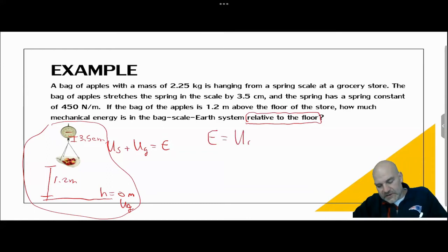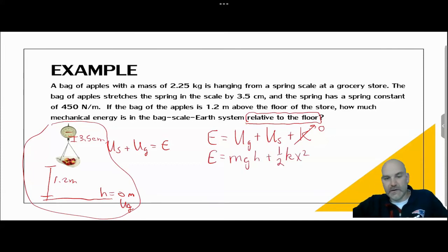So we're going to find the total mechanical energy. Now, there is no kinetic energy. I'll write it in the equation, but there is no kinetic energy because the apples are not moving. You put them in the scale, they just sit there. And so we do mgh plus 1/2 kx squared.